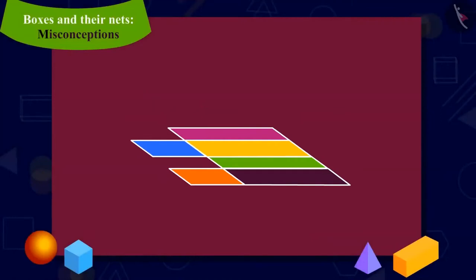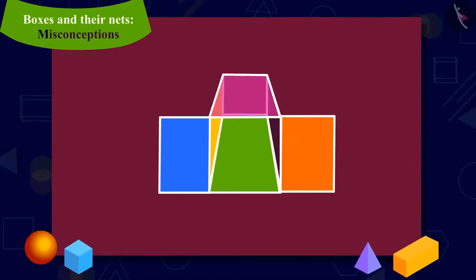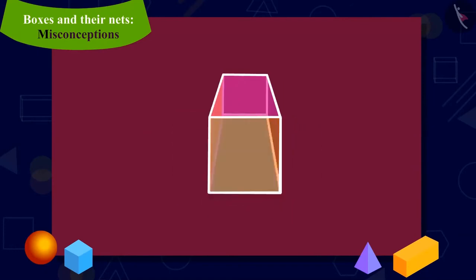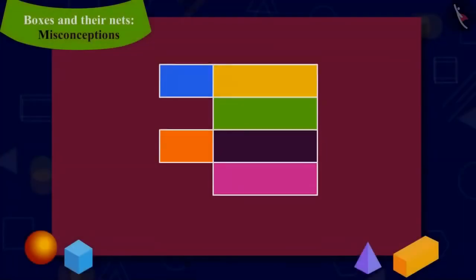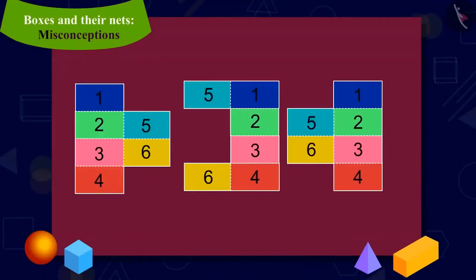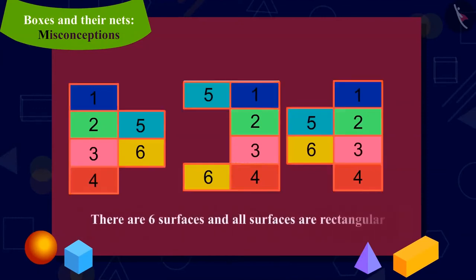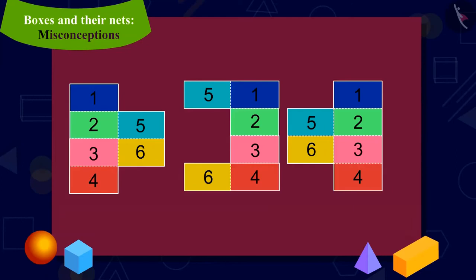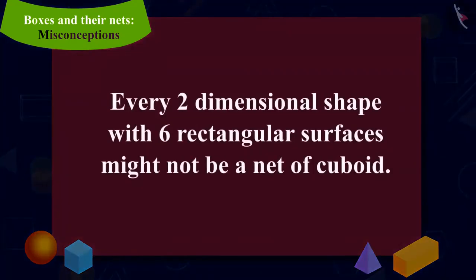Let us try to fold this cardboard cutout. Here, the two left surfaces are covering the same part of the box, while there is no surface on another part of the box. Thus, we are not able to make a cuboid shaped box. Kids, is it possible to have more such shapes which have six surfaces, all rectangular, but we cannot make a cuboid by folding them? Yes — every two-dimensional shape with six rectangular surfaces might not be a net of a cuboid.